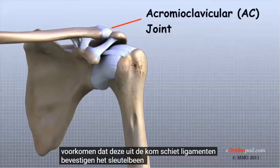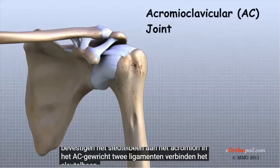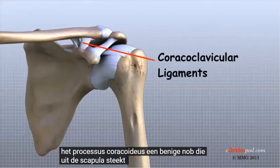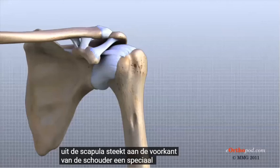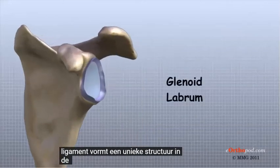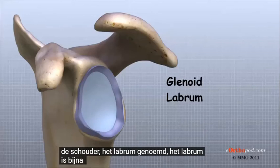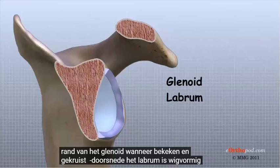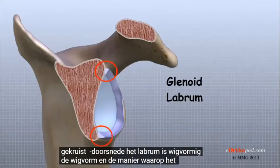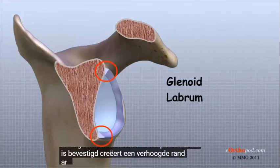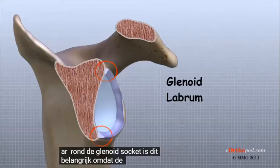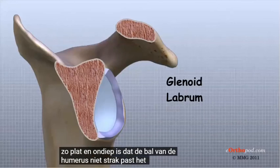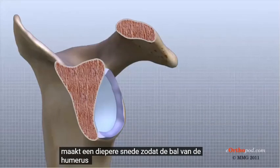Ligaments attach the clavicle to the acromion in the AC joint. Two ligaments connect the clavicle to the scapula by attaching to the coracoid process, a bony knob that sticks out of the scapula in the front of the shoulder. A special type of ligament forms a unique structure inside the shoulder called the labrum. The labrum is attached almost completely around the edge of the glenoid, and when viewed in cross-section, it is wedge-shaped. This wedge shape creates an elevated rim around the glenoid socket, forming a deeper cup for the ball of the humerus to fit into, since the glenoid socket is so flat and shallow.